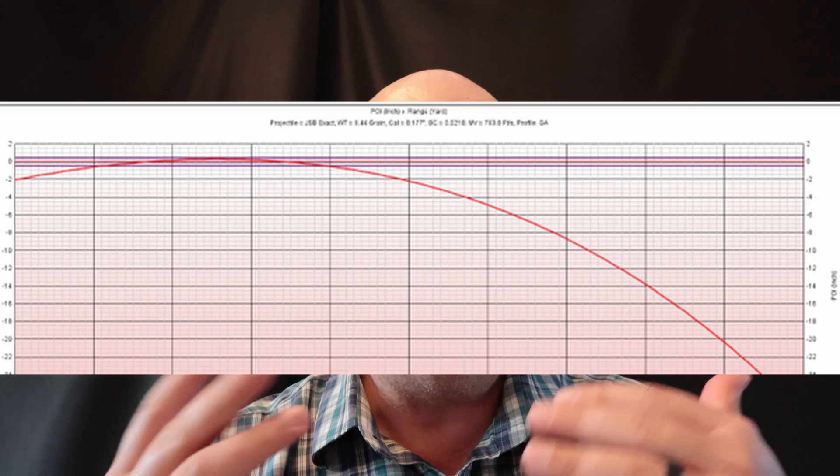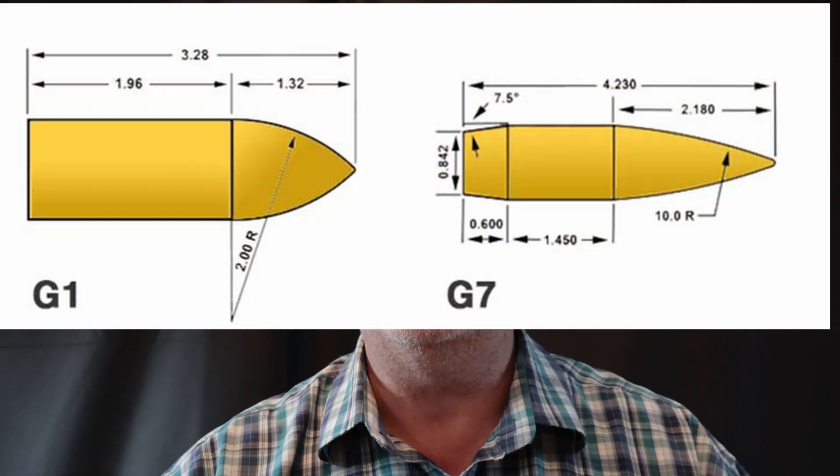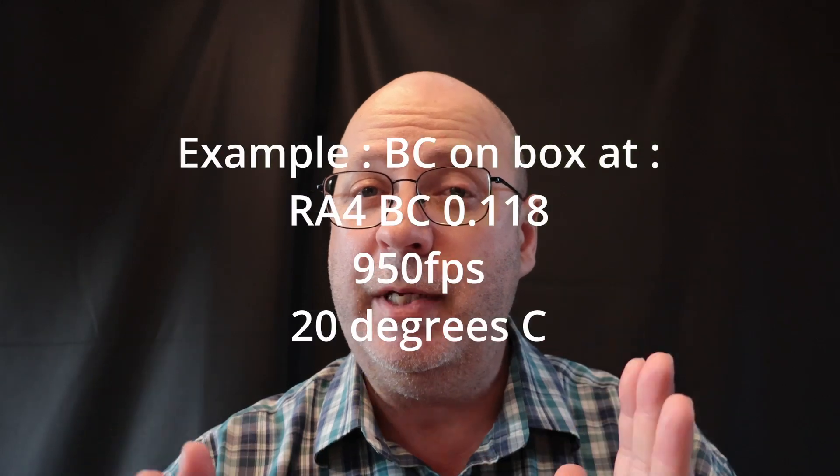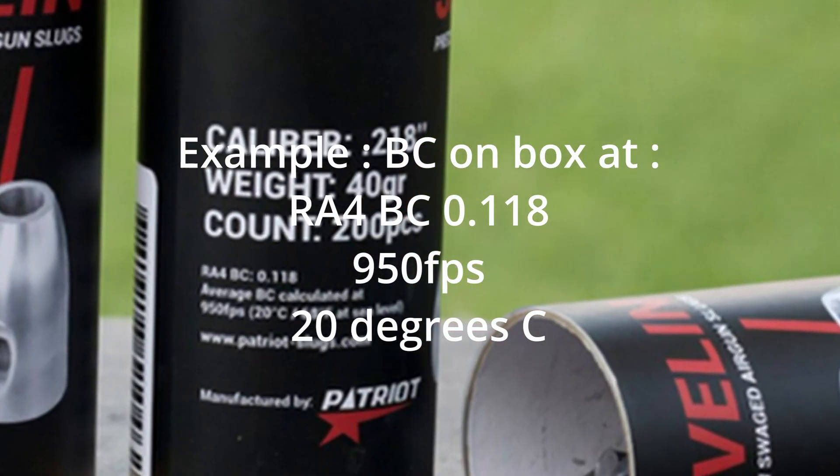There's also spin drift and all those fancy things, but for a .177 — just ignore it. So where can I use this? Chair Gun is one of those awesome programs where you can actually build a dope chart for yourself. We've got Strelok and Strelok Pro, the new Element Optics ballistic calculators, and all of that. Once I've got the BC, that will make the whole scenario easier. Your results will differ from mine because you'll shoot in different environments, but they won't differ that much.